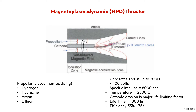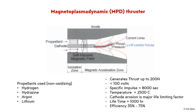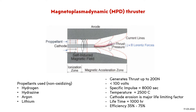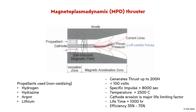Cathode erosion is one of the major life-limiting factors. However, being developed since the 1960s, MPD Thrusters have already demonstrated lifetimes in excess of 1000 hours. A pulsed MPD Thruster was successfully flown by the Japanese Institute for Space and Astronautical Science in 1997. Research on this thruster is currently being carried out by NASA, JPL, Princeton University, and several Russian institutes such as the Moscow Aviation Institute, and European and Japanese laboratories.